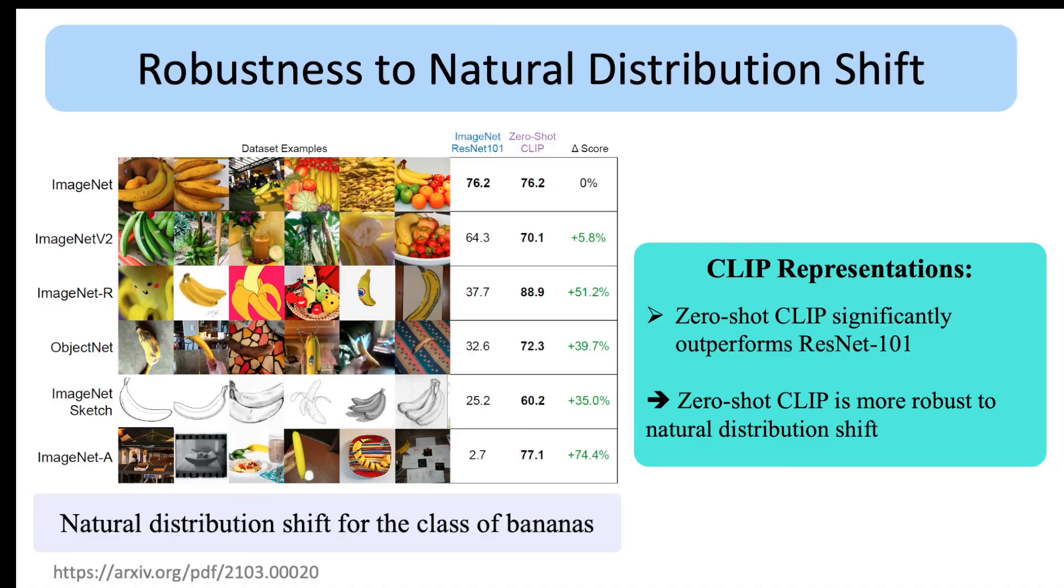The performance of zero-shot CLIP is compared with the ResNet model that is trained on ImageNet. As you can see, the zero-shot CLIP model outperforms ResNet by up to 75%. This result showcases that zero-shot transfer models such as CLIP are more robust to such natural distribution shifts.